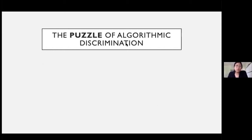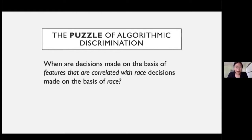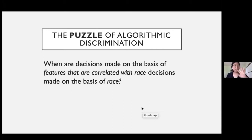Predictive database tools like those at the center of the HUD versus Facebook case clarify an underappreciated problem for discrimination theory, which I'm going to call the puzzle of algorithmic discrimination. The question is simply this: when are decisions made on the basis of features that are correlated with race, decisions made on the basis of race? This question is not just relevant to current debates about algorithms — a version of it has dogged philosophers and legal scholars for decades under the descriptor 'proxy discrimination,' in which an attribute that is a proxy for race or sex is used in decision-making. Predictive machine learning casts this old problem in new light.